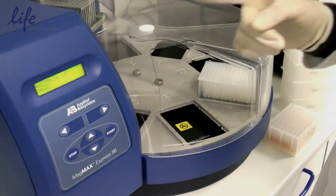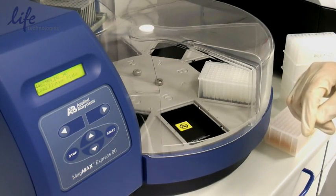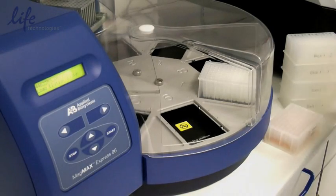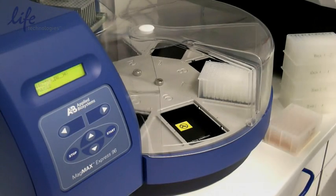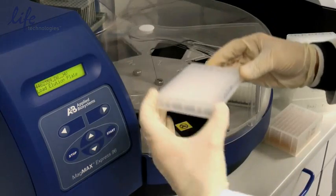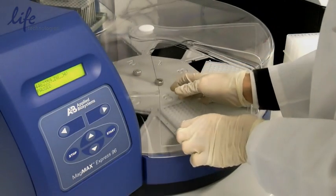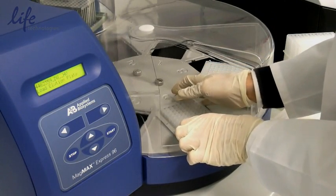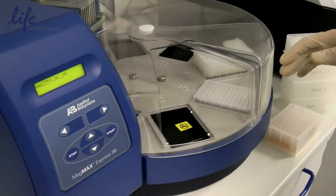Then we press start again and the instrument is going to ask for the next plate, the elution plate. As you can see, it's asking backwards, so this is my elution plate, which is going to be placed in the same position following the same orientation. Then we press start again.